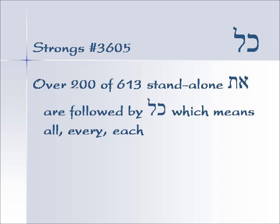As I was searching out the stand-alone Aleph Tavs, I found that out of the 613 of them that appear in the Westminster Leningrad Codex, over 200 of them were followed by another word — kol, kaf-lamed — which means all, every, or each. So the indication of the Aleph Tav, which means from the beginning to the end, is a third of the time followed by this word kol, which means everything.